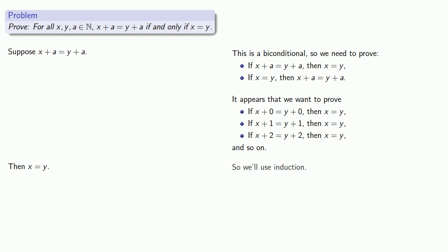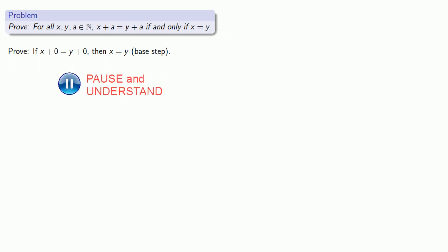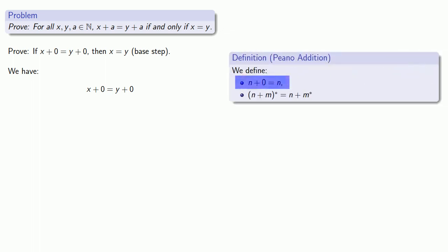This is the type of thing we would ordinarily prove by induction. In a proof by induction, we first prove the base step — that our statement is true for 0. So we want to prove that if x plus 0 equals y plus 0, then x equals y. Our definition of addition tells us what n plus 0 is, so we know that x equals y. That proves our base step.